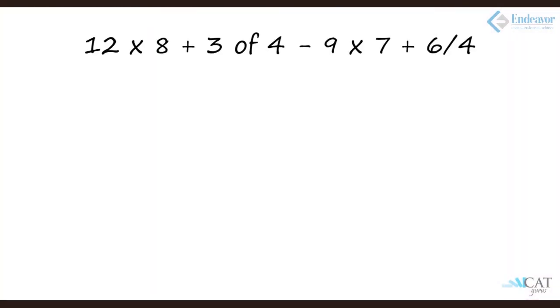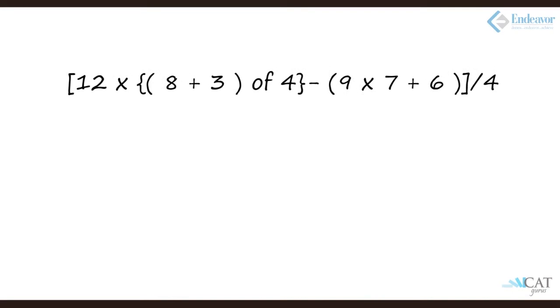Let's take an equation to solve it. The equation is 12 into 8 plus 3 of 4 minus 9 into 7 plus 6 divided by 4. Now it looks simple. Let's complicate it. Let's have the brackets in place. If you look at the equation, there are three types of brackets. There is a square bracket, there is a curve bracket and there is a simple bracket. The biggest bracket which is the square bracket has to be solved last, then the curve bracket and then the simple bracket. Let's look at how do we solve both these equations separately.